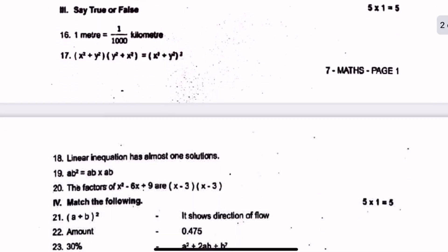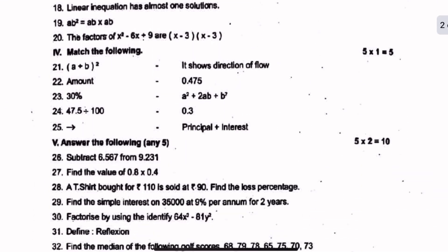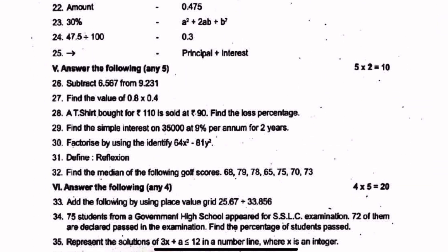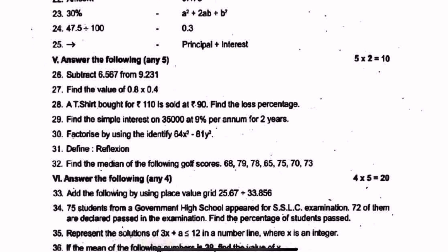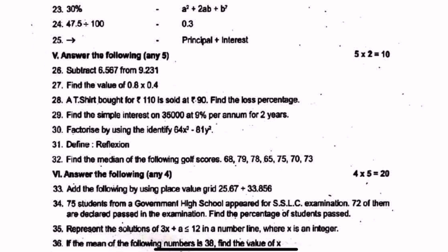Choose the best answer. Match the following. Subtract the two marks — this is very important. Value of 0.8 into 0.4. The type is important. Maybe 0.5 into 0.2. But the type is very important.